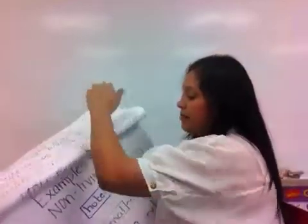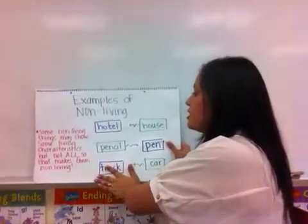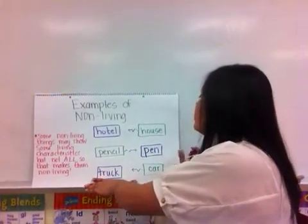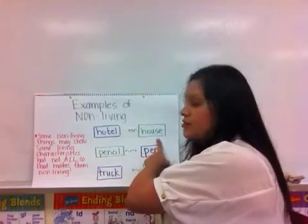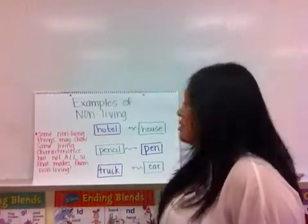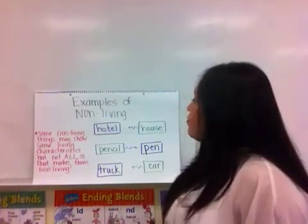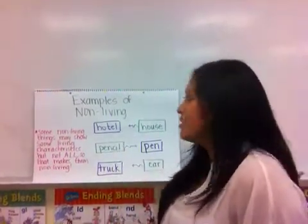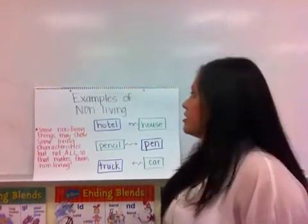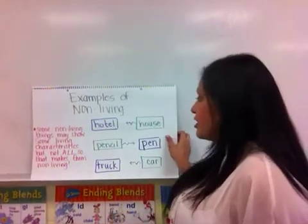Some examples of non-living: remember, some non-living things may show some living characteristics but not all, so that makes them non-living — such as hotels and houses, which don't need air, water, or food and don't reproduce. Pencils, pens, trucks, and cars are mainly all objects. If it's an object that doesn't possess the four characteristics, then it's considered non-living. And these are the two things we'll be covering in our research studies this week. Thank you.